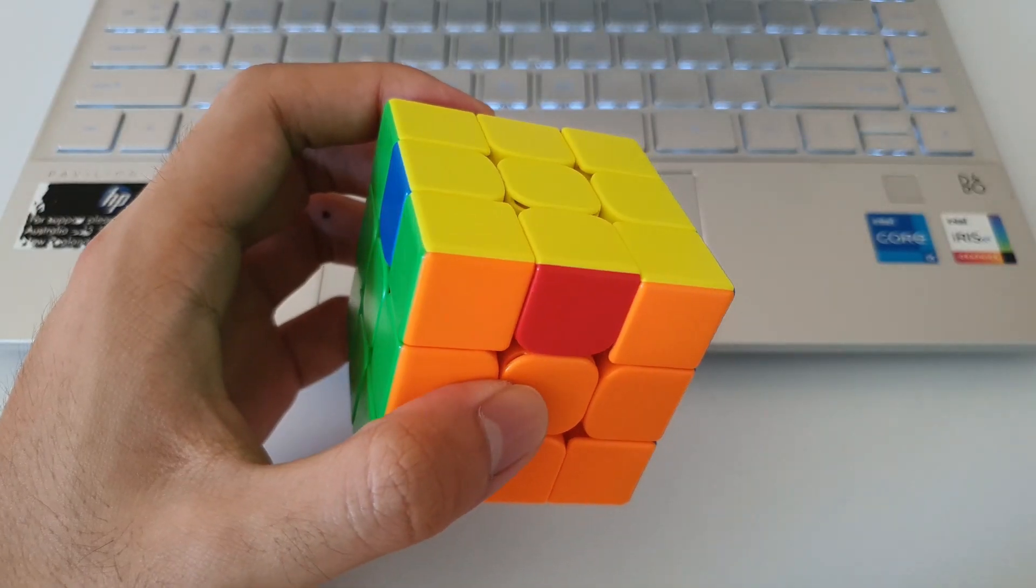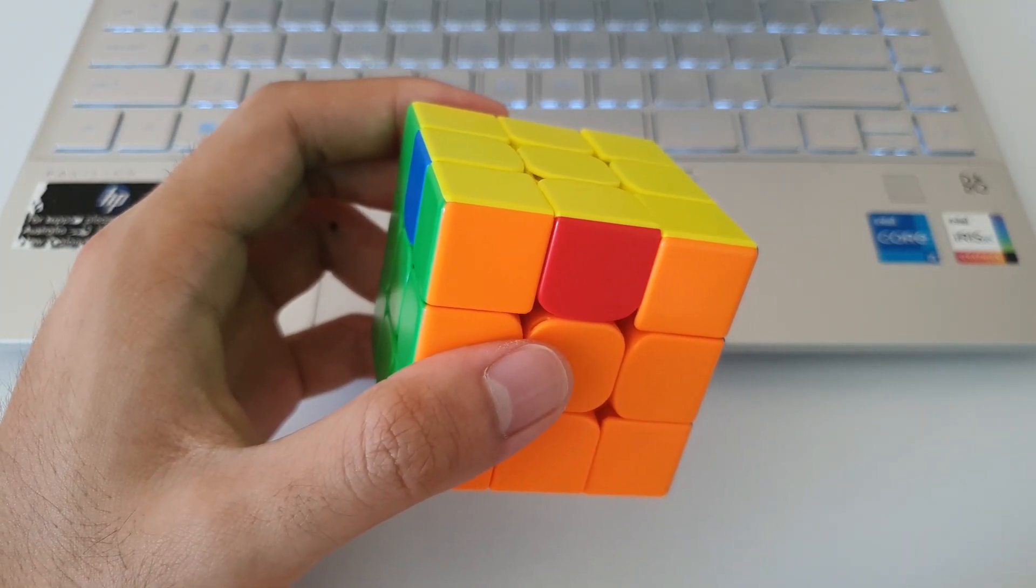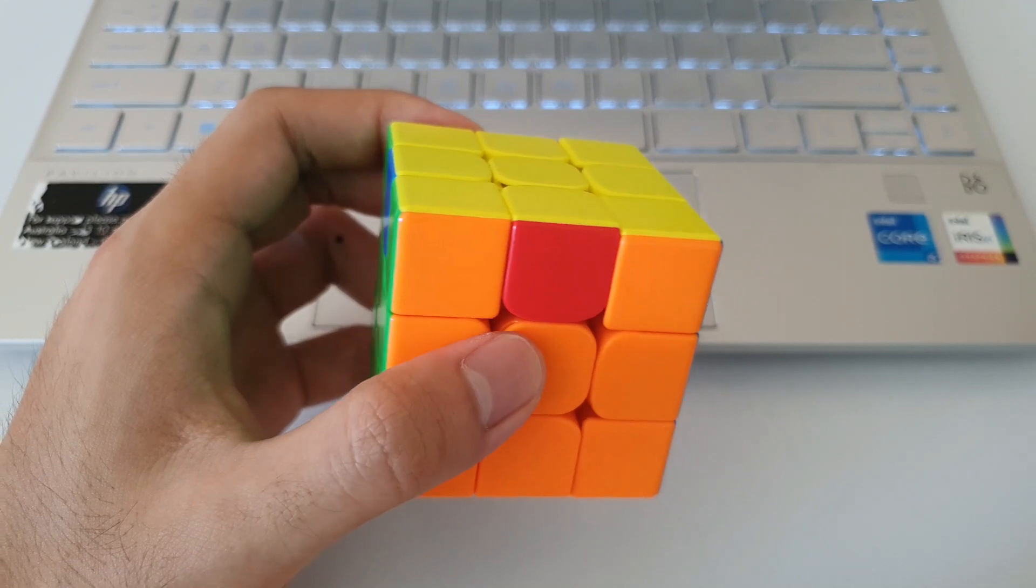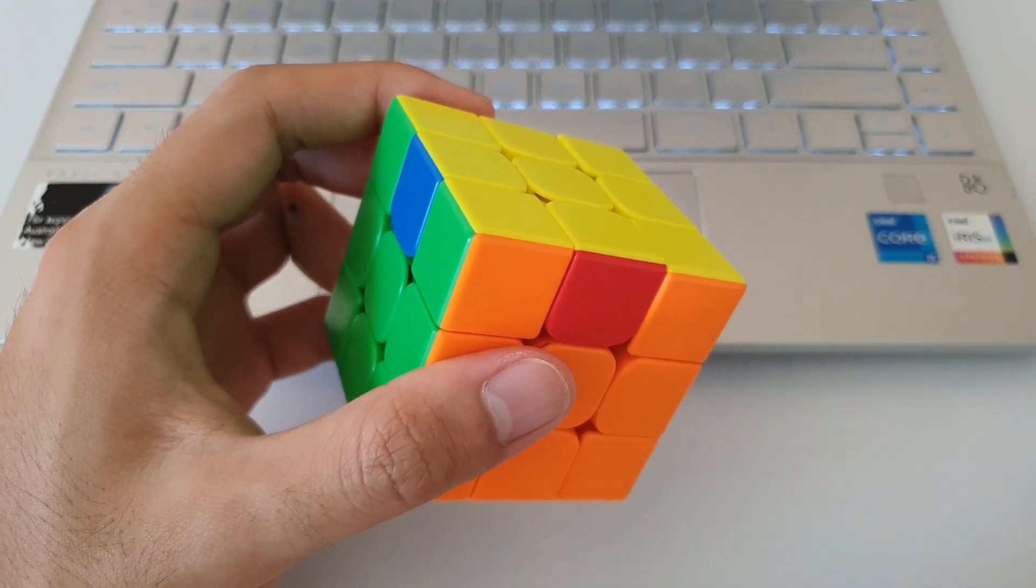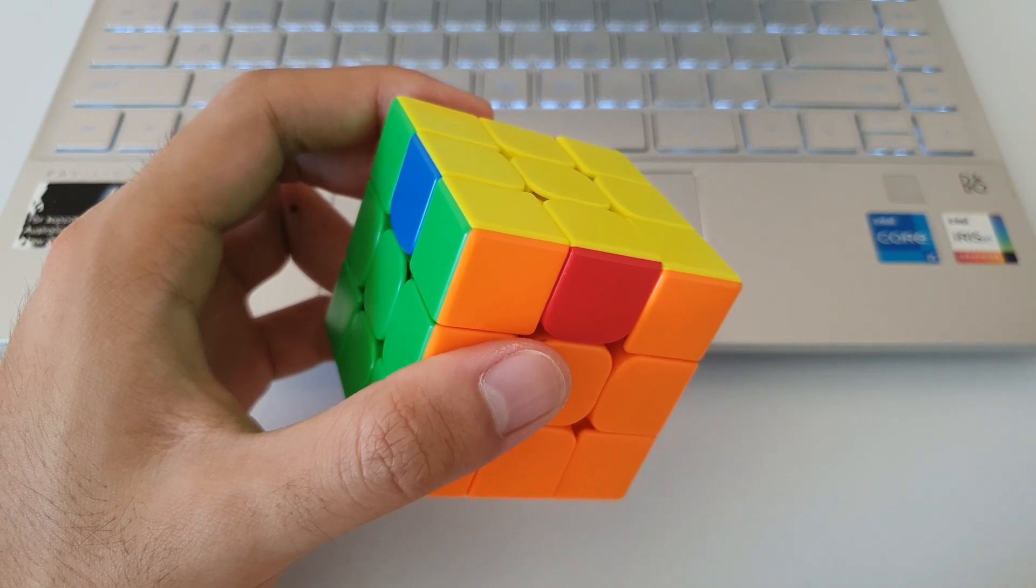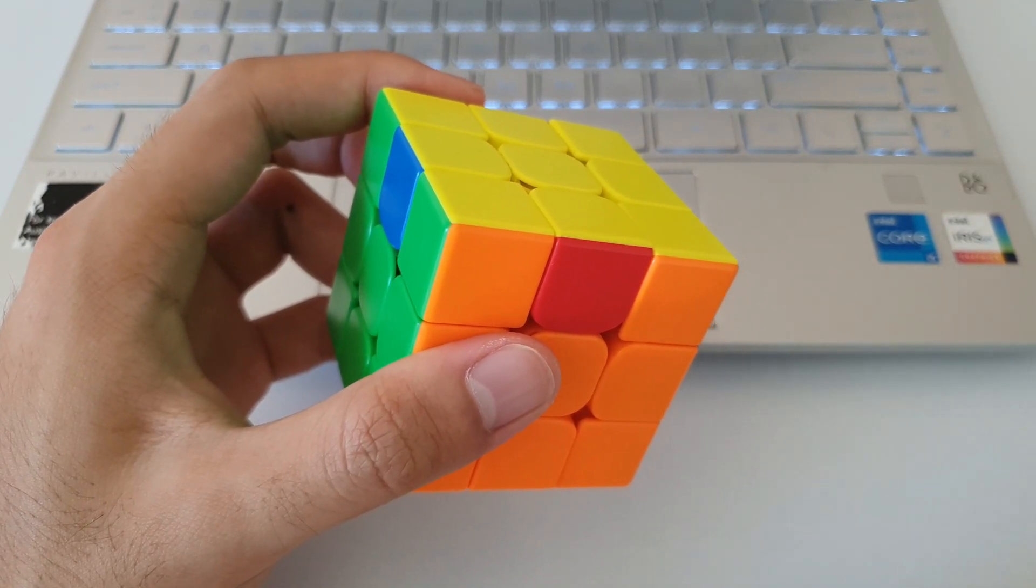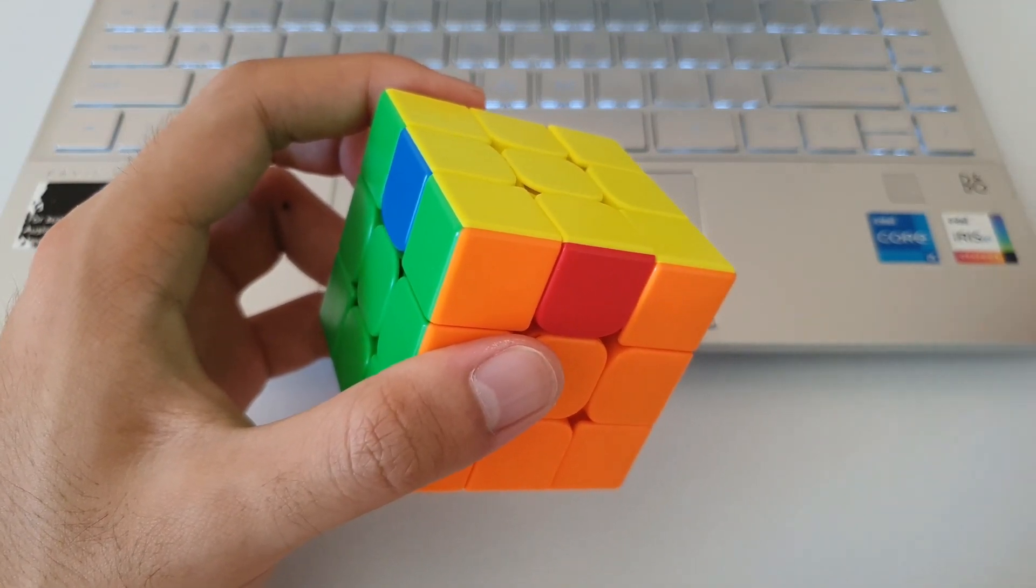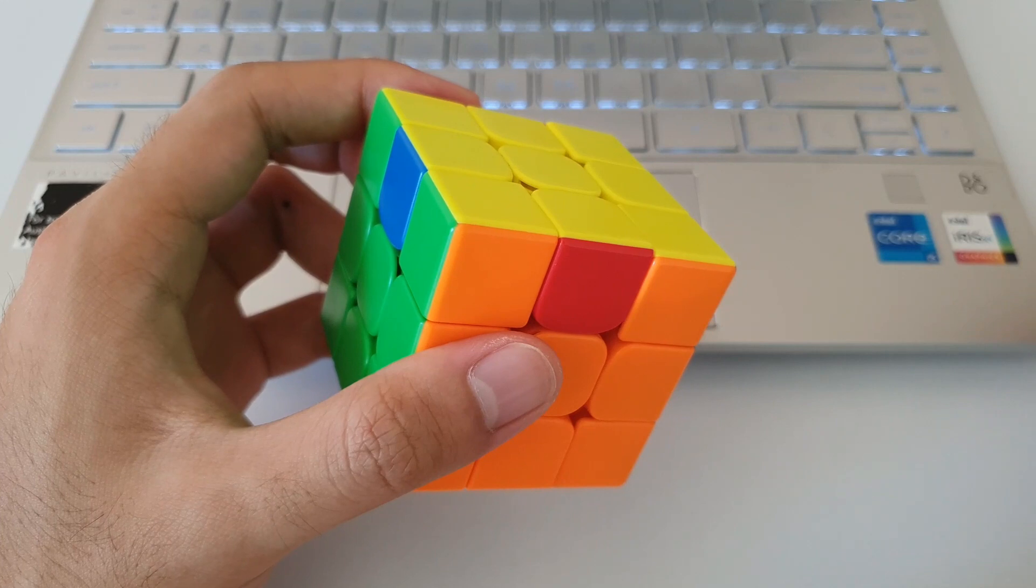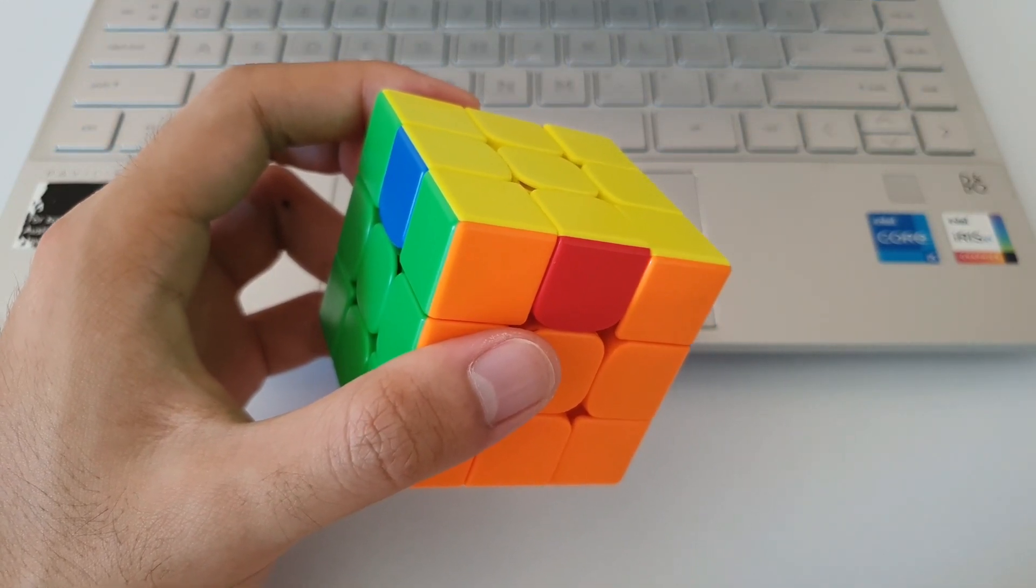So that's it for the H perm tutorial. Rather short tutorial, since H perms are already quite easy and quite straightforward. I hope this video was helpful for those of you who are still struggling with this algorithm. Like the video if you learned something new. Please subscribe if you want to see more similar videos, and share these videos if you know other people who are learning PLL or who want to learn PLL. It really helps grow the channel, and I really appreciate everyone's support. Thanks for watching, and I'll see you soon.